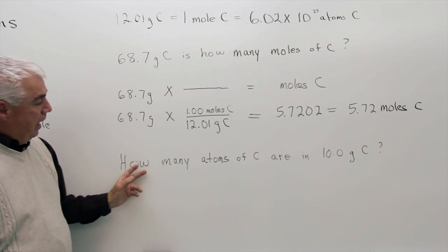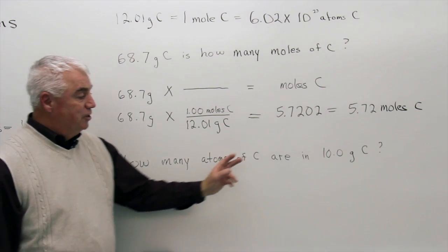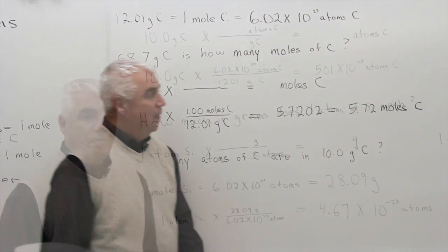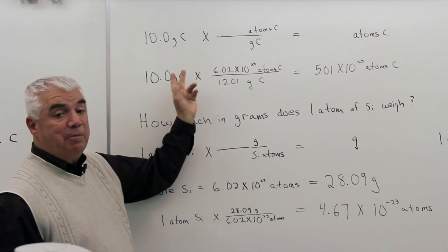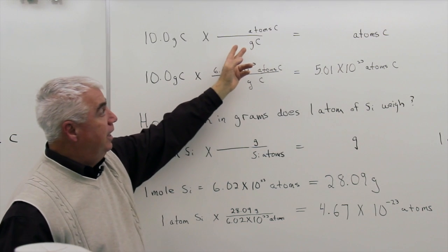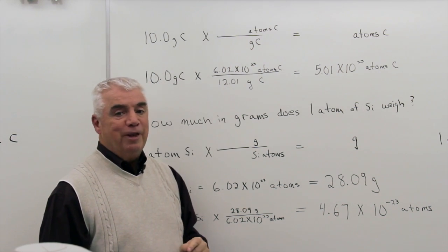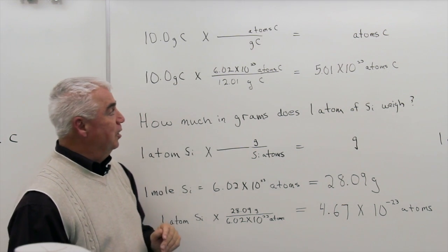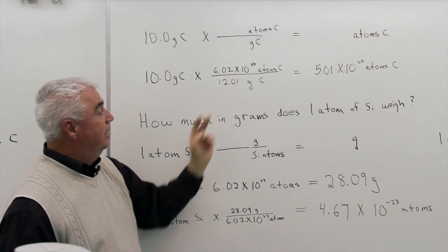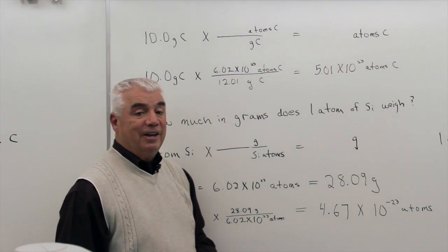Another similar problem: how many atoms of carbon are in 10.0 grams of carbon? If you saw this on a quiz or exam, say to yourself 'math problem' — we see a number, we don't have a formula, so we use the factor unit method. Step one: the number given and its unit. Step two: the unit of the answer. Step three: the unit of the answer up in the numerator, the unit given down in the denominator. With a little practice you can do that in about 10 seconds, and it's almost guaranteed to give you the right answer. The numbers come from the mole concept: 6.02 times 10 to the 23rd atoms, and one mole of carbon is 12.01 grams. We put in those numbers and here's our answer to three significant figures.